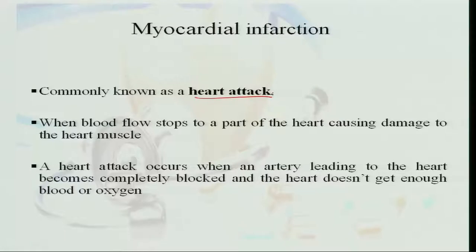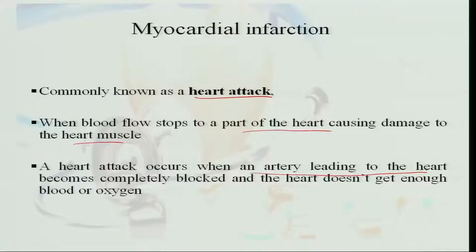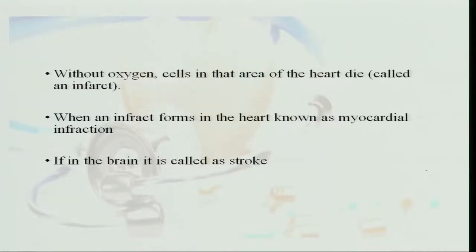When the blood flow stops to part of the heart muscle — because the heart also has its own circulation — it causes damage to the heart muscle. A heart attack occurs when the artery leading to the heart becomes completely blocked by atherosclerosis, so the heart does not get proper blood supply, oxygen, or nutrients, and the heart muscle gets fibrosed. Without oxygen, the cells in that area of the heart die; this is called an infarct. Since it occurs in the muscles of the heart, it is called myocardial infarction.